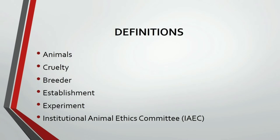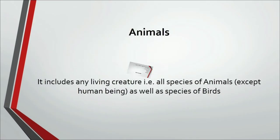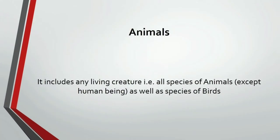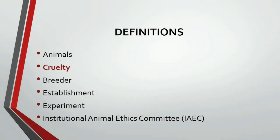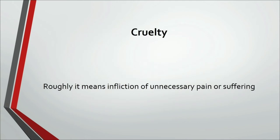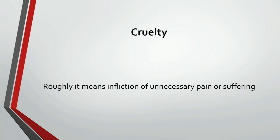Now let's see some definitions which will be helpful to understand this act and which could be asked in the examination. Starting with the first definition: the definition of animal. The definition of animal includes any living creature — that is, all species of animals except human beings — but it also includes birds.